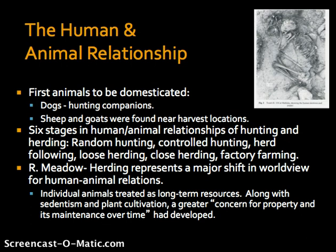The human-animal relationship has changed quite a bit over time. Dogs are the earliest known animals to be domesticated, serving as early hunting companions, though they've gone through many transformations in how they've been regarded. We also see sheep and goats present in many agricultural locations. Meadow maintains there are six stages in the human-animal relationship, from random hunting to factory farming, which fundamentally shifts the relationship not only physically but also ideologically. Meadow maintains that herding represents a major shift in worldview overall.